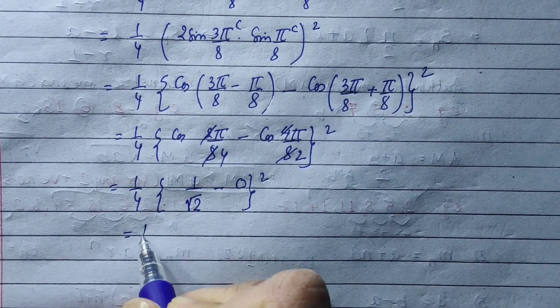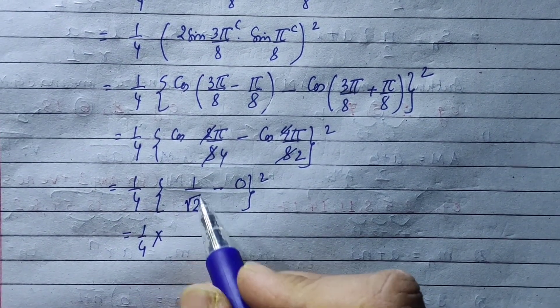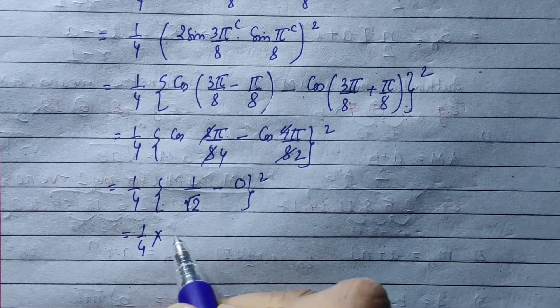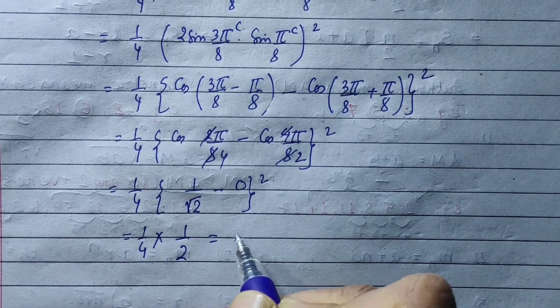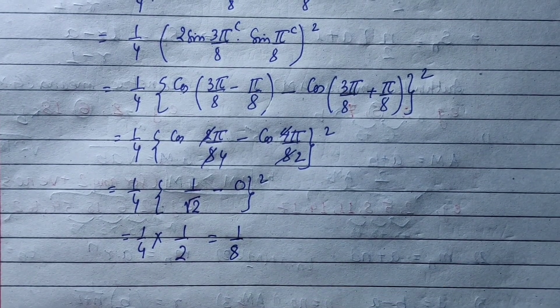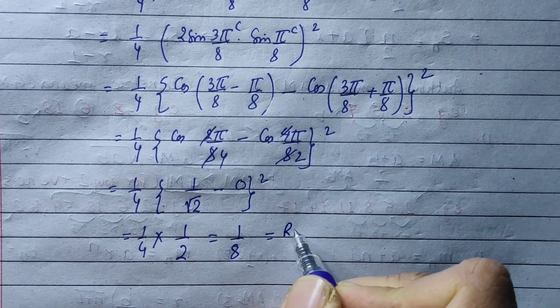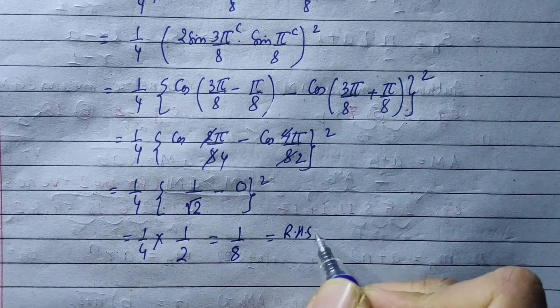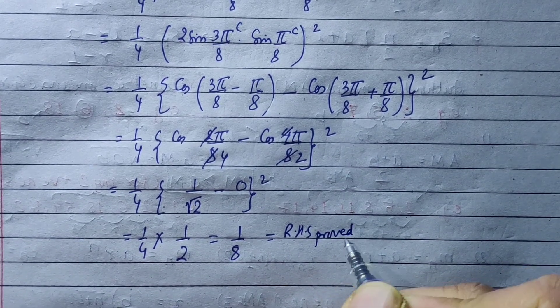So here we have (1/4) × (1/√2)² = (1/4) × (1/2) = 1/8. This completes the proof.